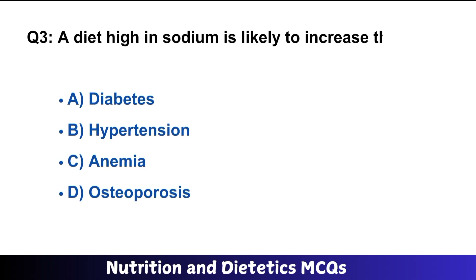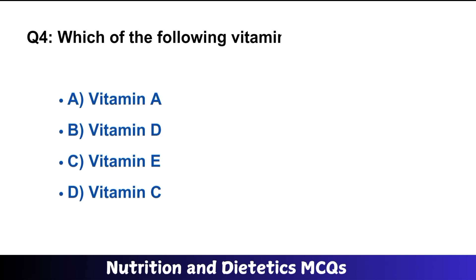Question number three: a diet high in sodium is likely to increase the risk of — B is the right option: hypertension. Question number four: which of the following vitamins is water soluble? D is the right option: vitamin C.